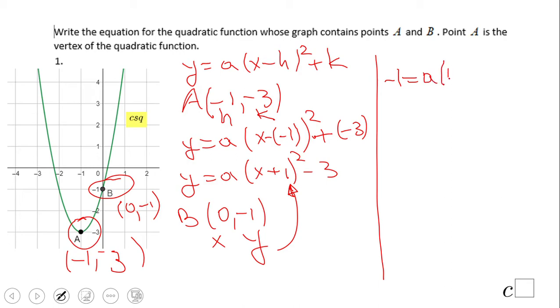x is zero, so -1 equals a(0 + 1)² - 3. We get -1 equals a minus 3. In order to find a, we add 3 on both sides, and a equals 2. So the final answer to our problem is y equals 2(x + 1)² - 3.